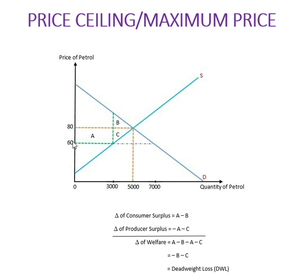For the producer, the price goes down from 80 to 60, which is a loss. The producer loses the A rectangular area, so A is recorded as a loss. Additionally, because the price is lower, suppliers supply less and lose the C triangle — they are no longer willing to supply that portion after the ceiling is imposed. So the change in producer surplus is minus A minus C.